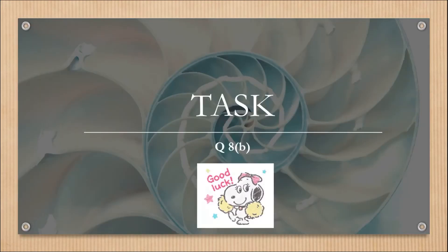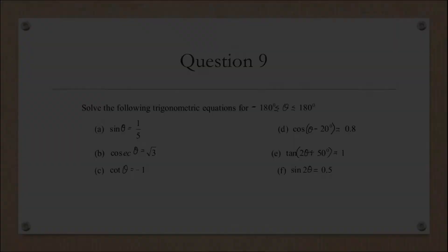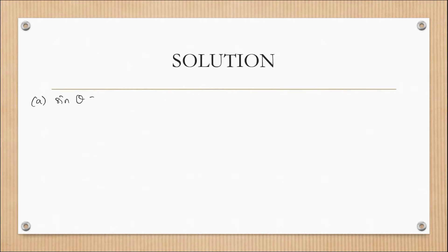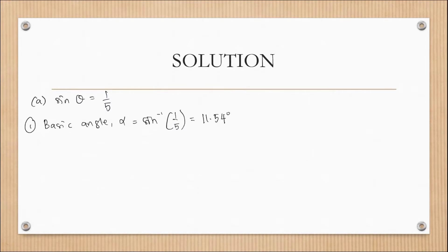That's the answer for question 8a. Question 8b I will leave as your task. Next is question 9: solve the trigonometric equation for theta where negative 180° ≤ θ ≤ 180°. Question 9a: sin θ = 1/5. Step one is to find the basic angle: arcsin(1/5) = 11.54°.